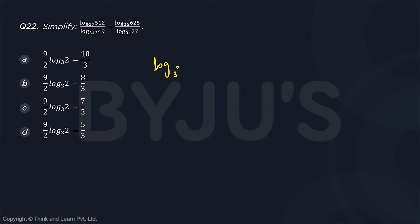So log 27 is 3 cube, 512 is 2 power 9, by log 49 is 7 square, 343 is 7 cube, minus log 625 is 25 square or 5 power 4.